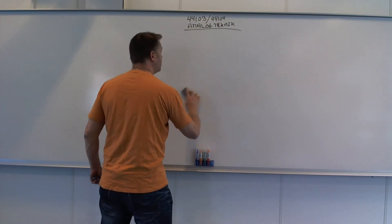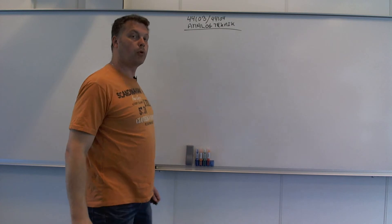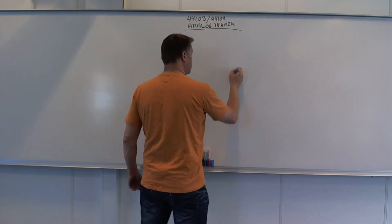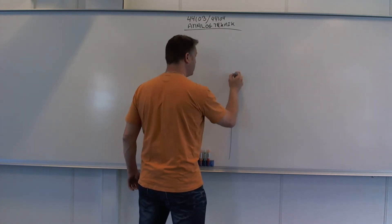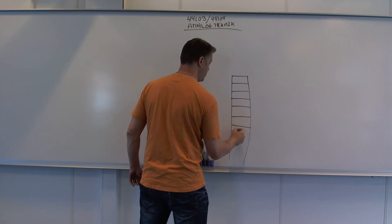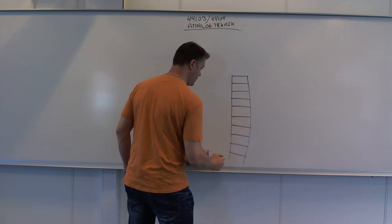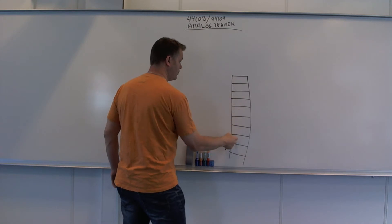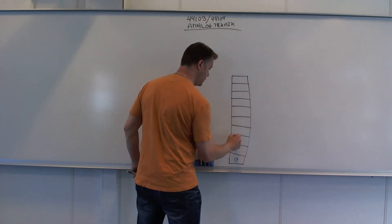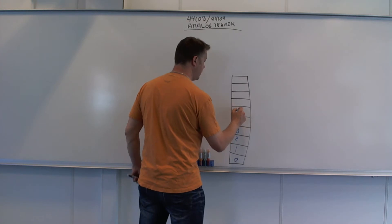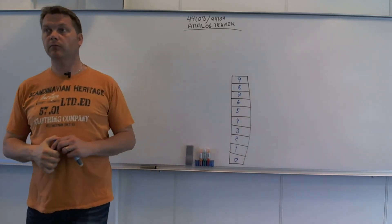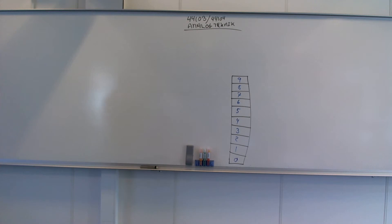Og nu vil vi prøve at sætte nogle andre symboler over, så vi får nogle helt andre talværdier. Det vi kender i dag: 1, 2, 3, 4, 5, 6, 7, 8, 9. Det er det talsystem, vi kender i dag. Det er vores decimaltalsystem.